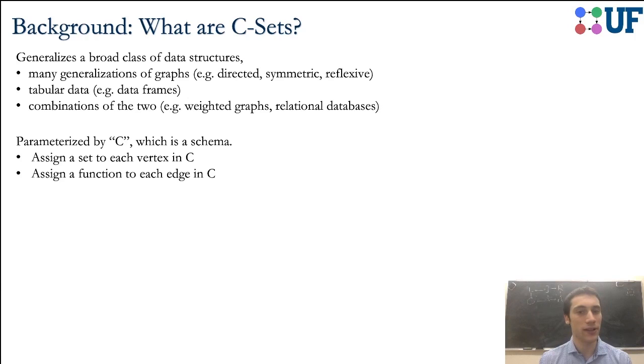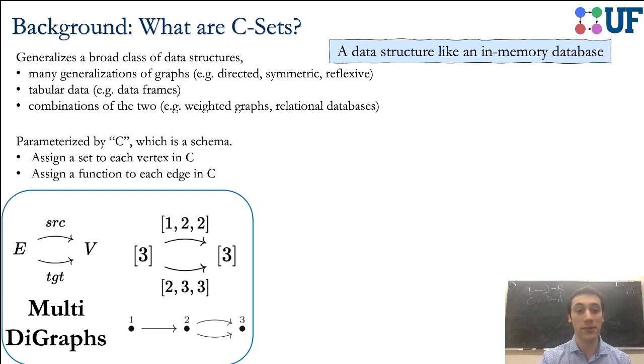A C-Set isn't a specific data type, but rather once you provide a C, which is a parameter, you get a data type. This C plays the role of a schema in a relational database. That C comes from the word category, because many things that we do with this data structure are informed by the math of category theory. But don't worry, you don't need to know any category theory to fluently use these data structures.